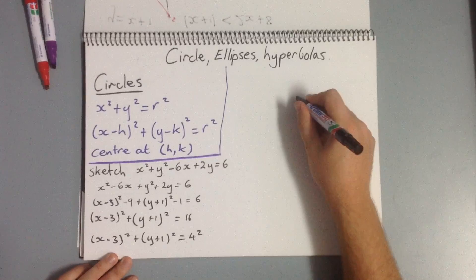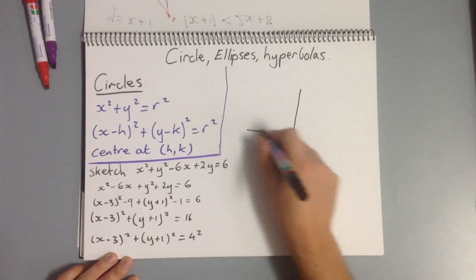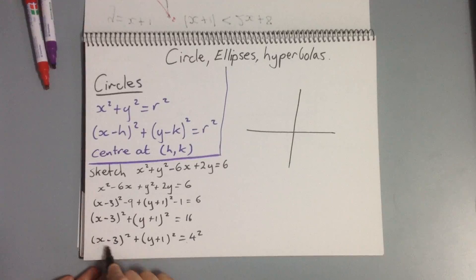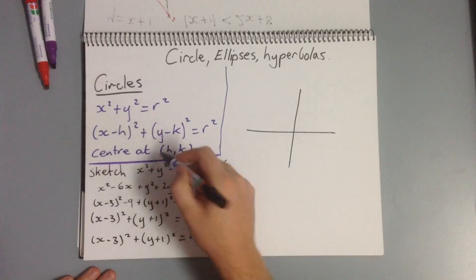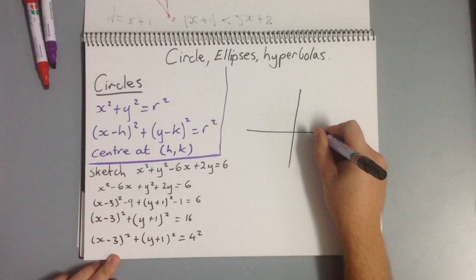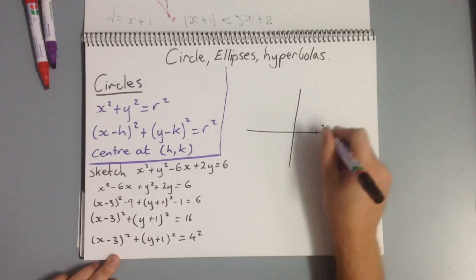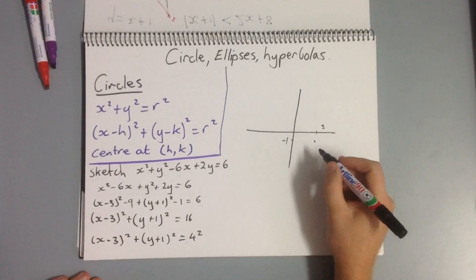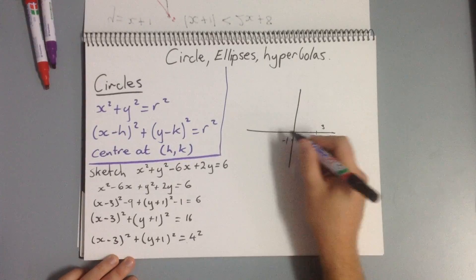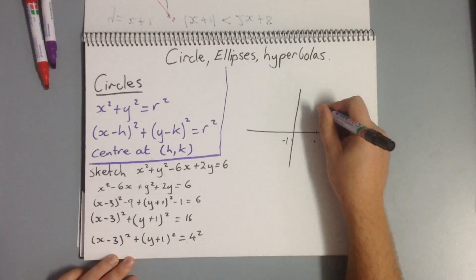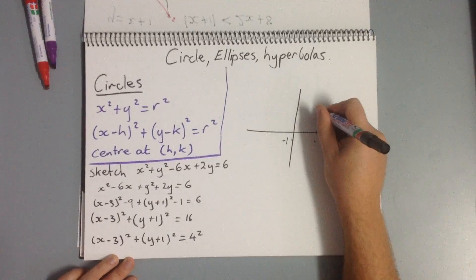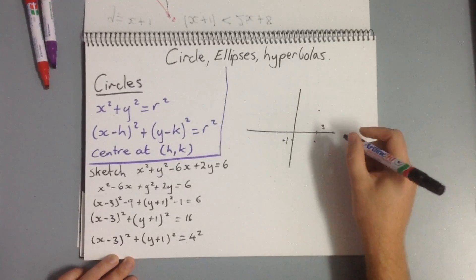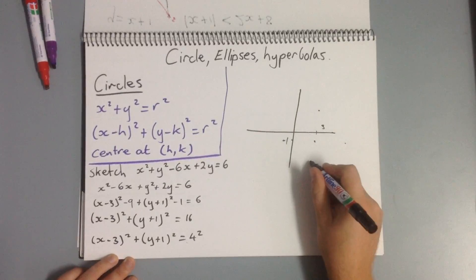So now we can actually sketch it. We've got our axes. Our center is at positive 3, negative 1, because we switch our signs. We know we have a radius of 4. So we're going to come out a bit further. If you like, give yourself a few guide marks: it's got to be up at positive 3, about negative 1, so we'll mark right about there, up here, and down about there.